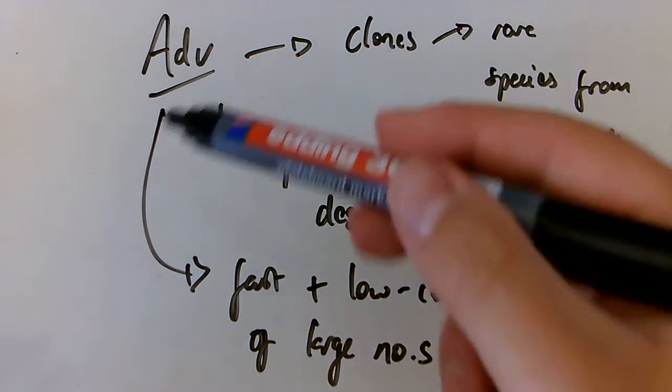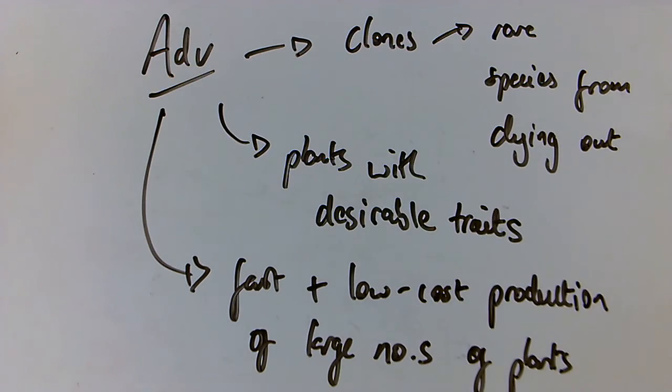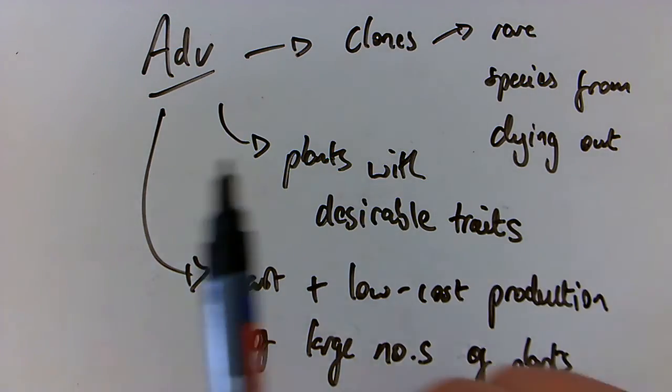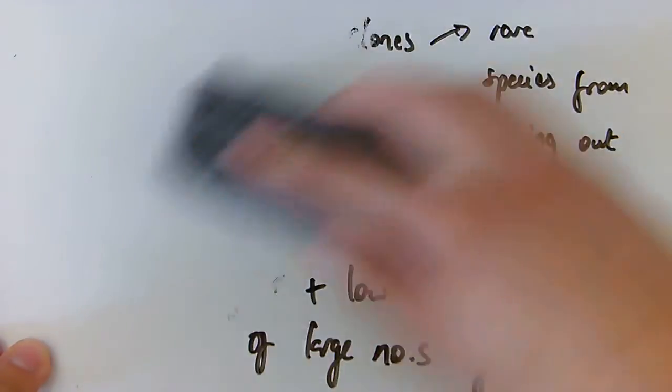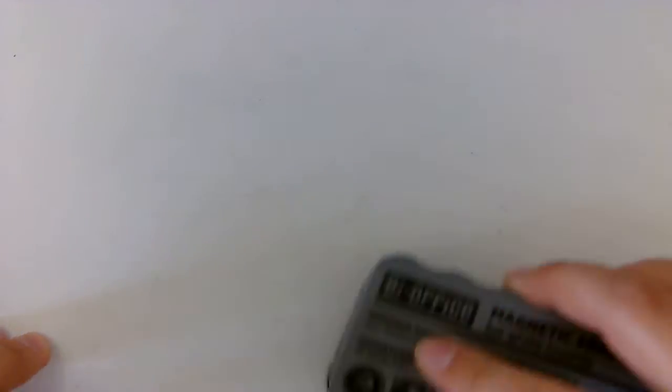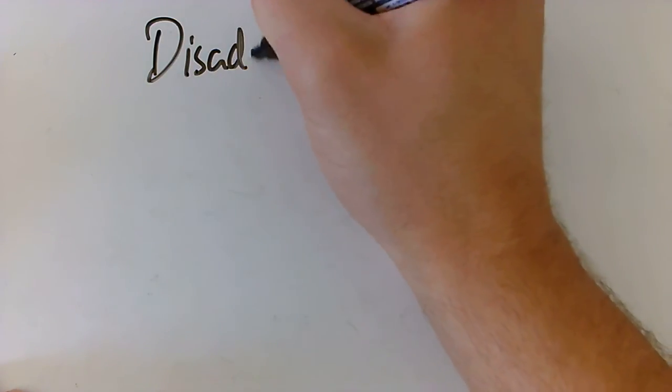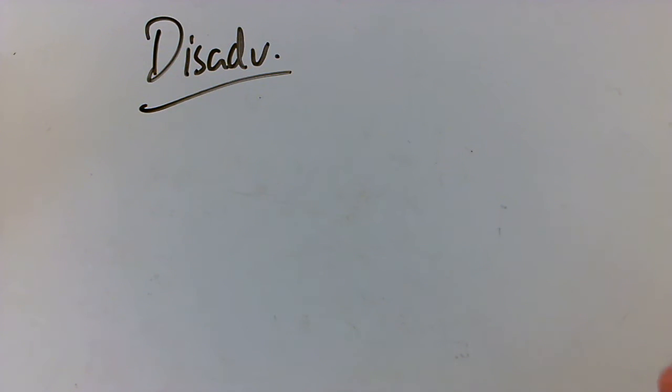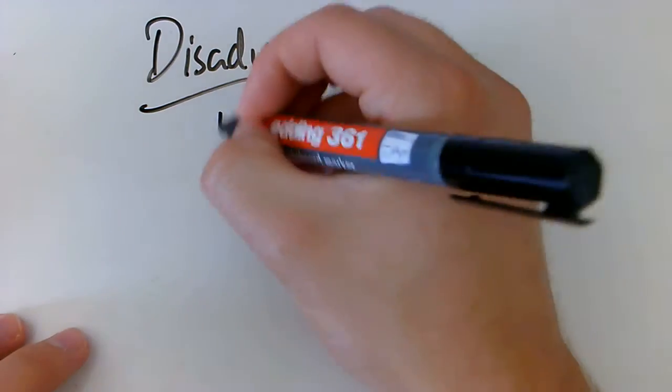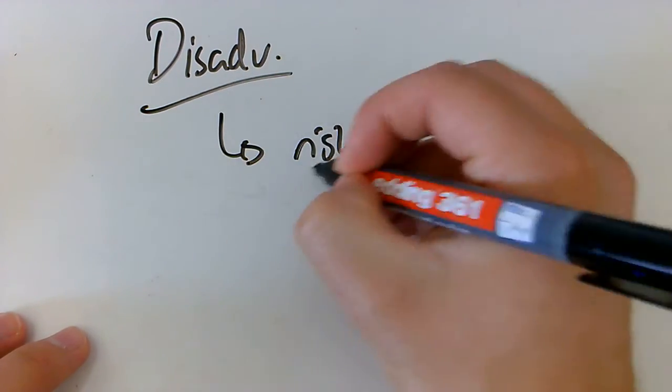So then that can be used as a process in terms of creating large numbers of crops, for example. But as we always have, as I've said on the last ones, there will be a disadvantage involved in this. And for plant meristem cells is that if everything is identical, then there is going to be a risk with that.